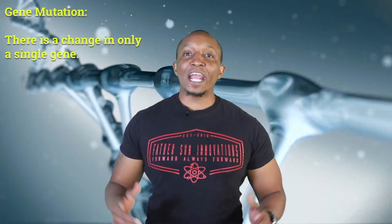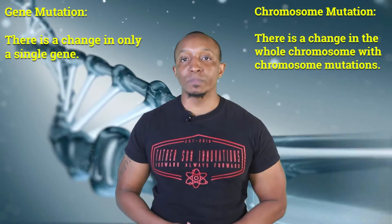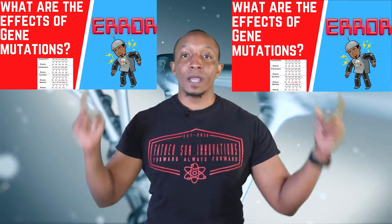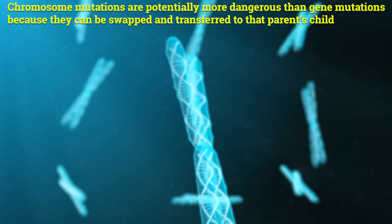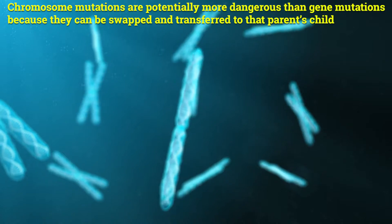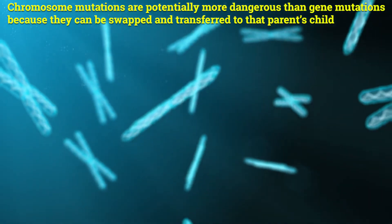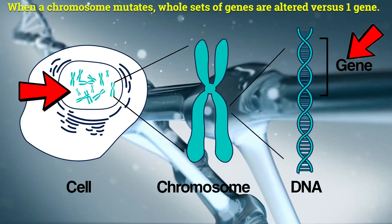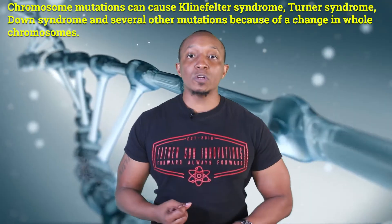Like we stated in our last video, there is a change in only a single gene with gene mutations, but there is a change in the whole chromosome with chromosome mutations. For more on gene mutations, check out our video link above. Chromosome mutations are potentially more dangerous than gene mutations because they can be swapped and transferred to that parent's child. When a chromosome mutates, whole sets of genes are altered versus one gene. Chromosome mutations can cause Klinefelter syndrome, Turner syndrome, Down syndrome, and several other mutations because of a change in the whole chromosome.